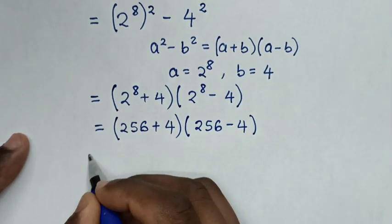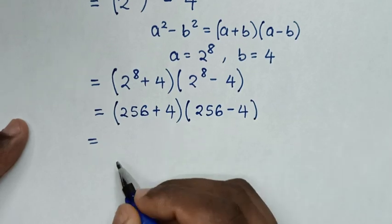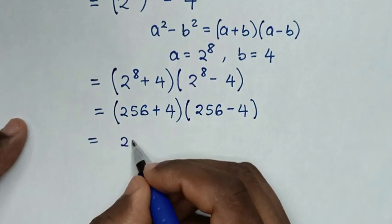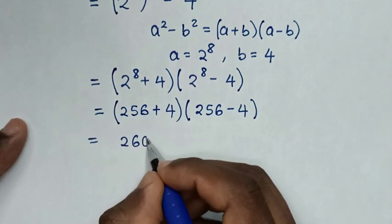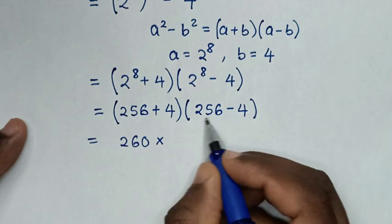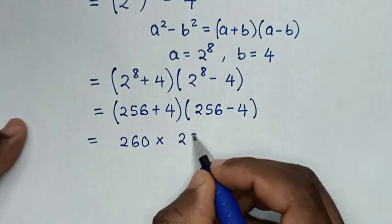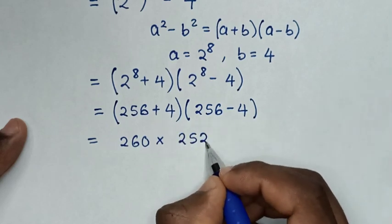So it will be equal to: 256 plus 4 is 260, times 256 minus 4 is 252.